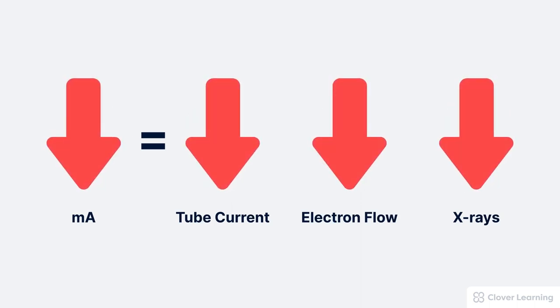Conversely, if we decrease the MA at the control console, this decreases the tube current, which is by definition a decrease in the rate of electrons flowing through the x-ray tube. And this decreases the number of x-rays produced.